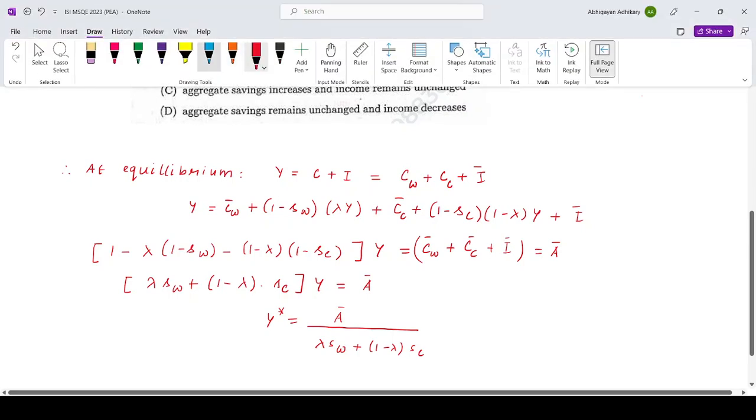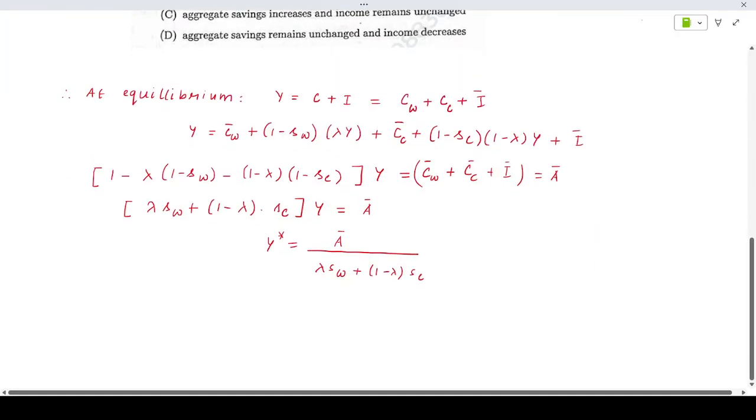The first thing that we want to find out is the change in Y star due to change in lambda. If we do that, it would be minus A bar divided by denominator whole square, which is 1 minus lambda SC whole square times SW minus SC.